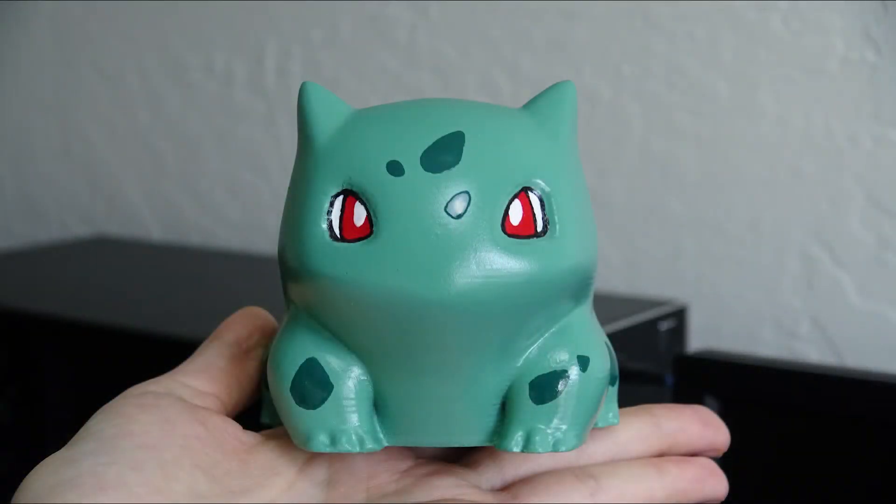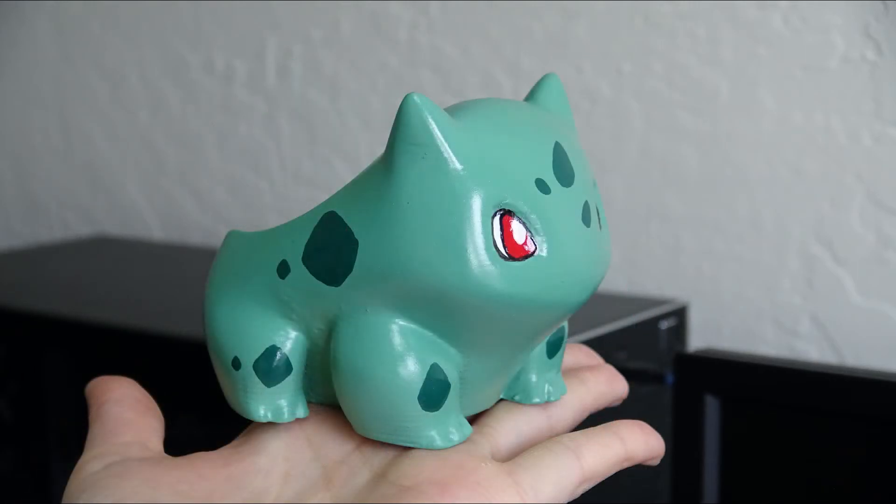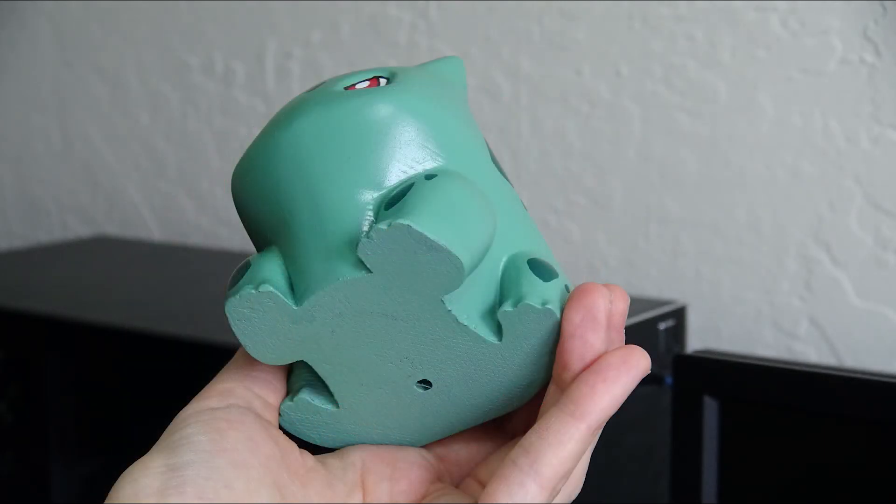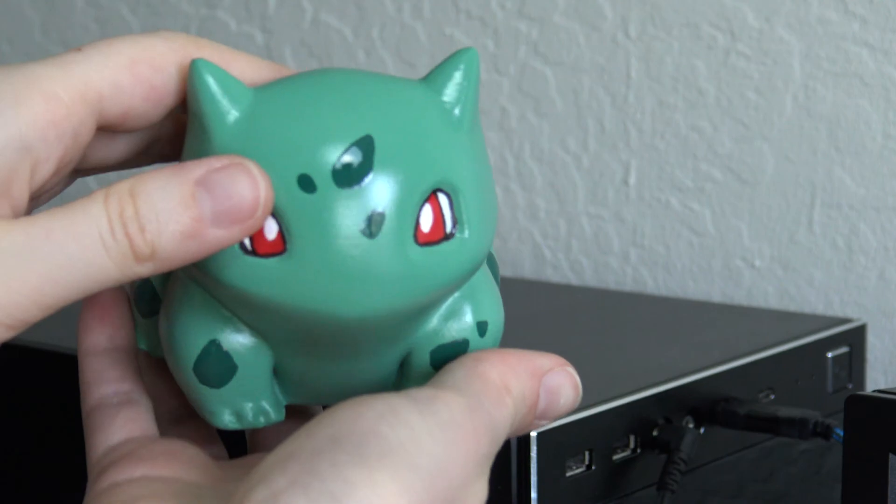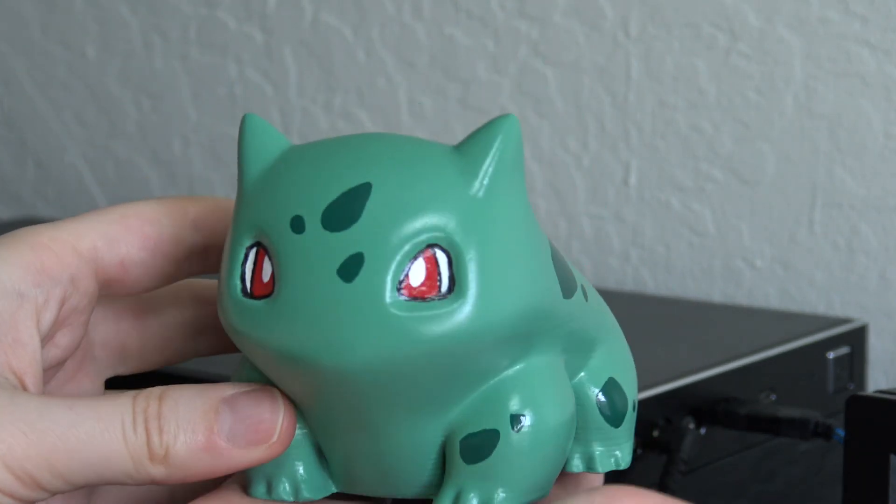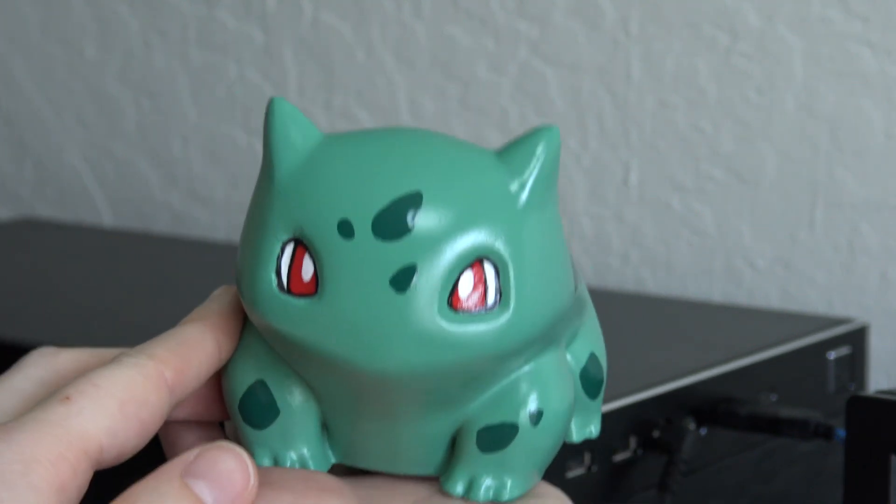This is the final result after 3D printing, sanding, priming, painting and finishing the 3D printed statue of Bulbasaur from the anime and game Pokémon. I hope you enjoyed this video. If you liked this video don't forget to give a like and subscribe to this channel to receive more 3D printing videos. Don't forget to follow us on social media, Twitter and Facebook. I see you next time, bye bye!